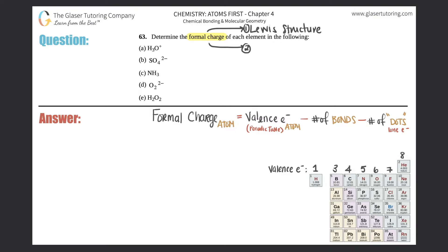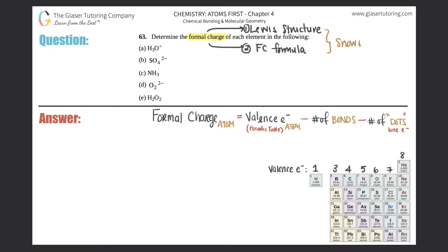The second thing is the formal charge formula. The textbook gives you one, but I find it a little confusing, so I like to use my own which I've provided here. You just have to memorize this formula and apply it when you draw your Lewis structures. Now, why do we need formal charges? They tell you if an element or molecule as a whole is stable — they show stability.